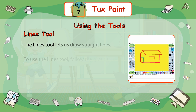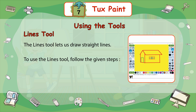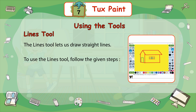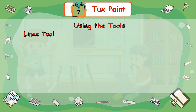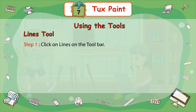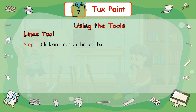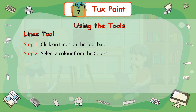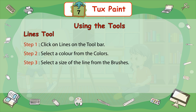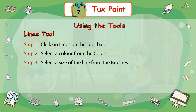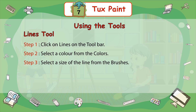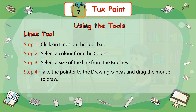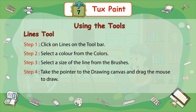Lines tool. The Lines tool lets us draw straight lines. To use the Lines tool, follow the given steps. Step 1: Click on Lines on the toolbar. Step 2: Select a color from the colors. Step 3: Select a size of the line from the brushes. Step 4: Take the pointer to the drawing canvas and drag the mouse to draw.